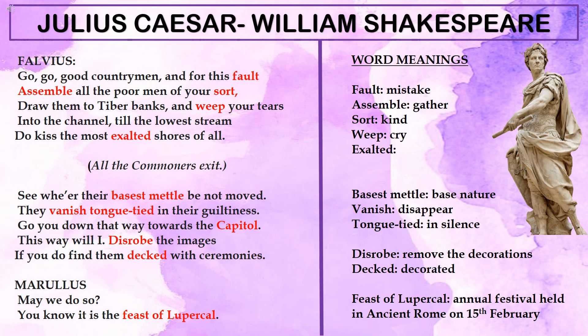When Flavius announces he will remove the decorations and statues welcoming Caesar, Marullus hesitates: 'May we do so? Is it right for us?' His doubt arises because Caesar is already gaining enormous popularity, and also because today is the Feast of Lupercalia — an important festival being celebrated alongside Caesar's return. He questions whether it is appropriate to remove decorations on a day of celebration.